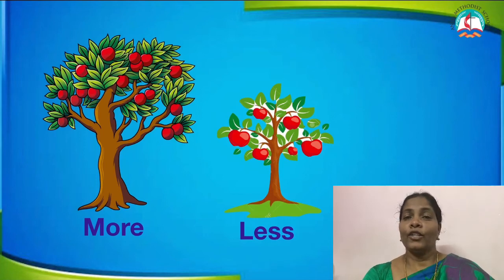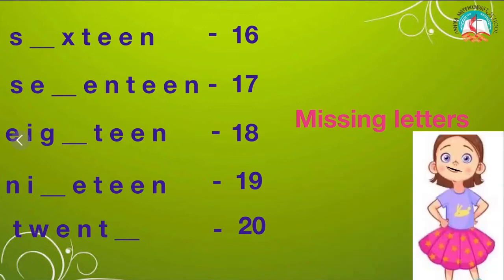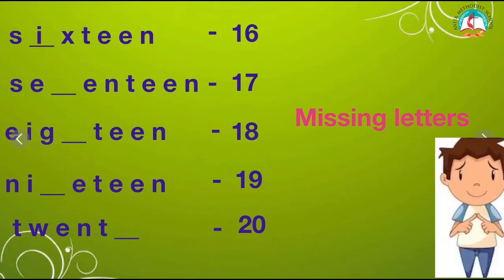Children, next one. You have to do missing letters. Come on, children. A student: Miss, I know this — may I do? The missing letter of number 16 is I. Miss, I know this — shall I do? The missing letter in 17 is V.